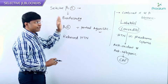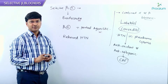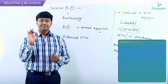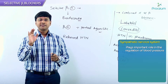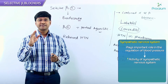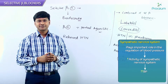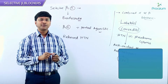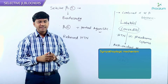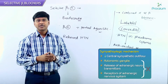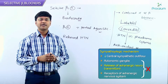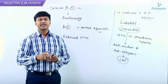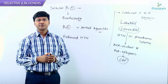This covers alpha blockers, beta blockers, and combined alpha and beta blockers — all drugs that cause sympathoplegia. The sympathetic nervous system plays an important role in blood pressure regulation. If it is excessively stimulated, blood pressure rises. Sympathoplegia can be achieved in four ways: decreasing central sympathetic outflow, blocking autonomic ganglia, blocking release of adrenergic neurotransmitters, and blocking adrenergic receptors — thereby reducing blood pressure.